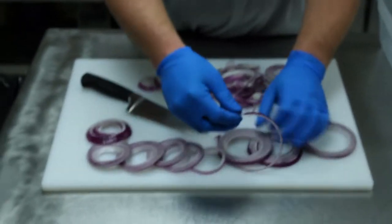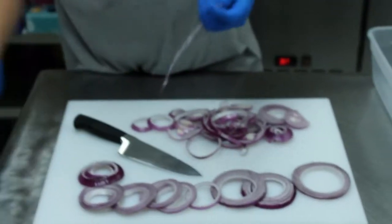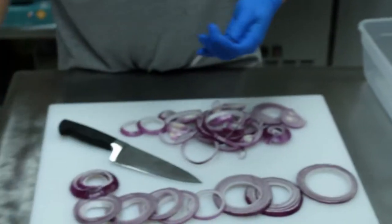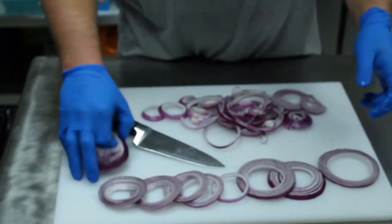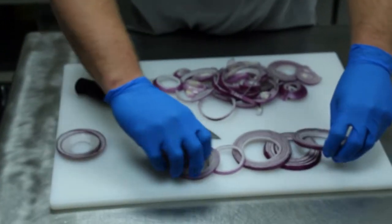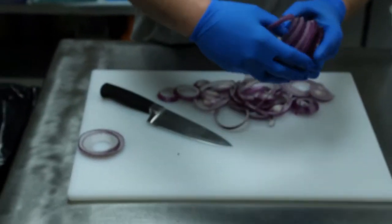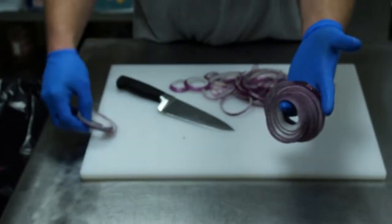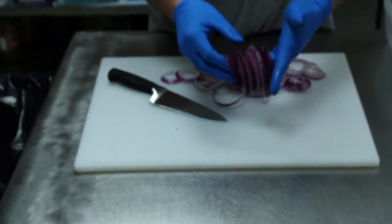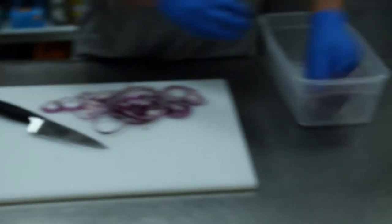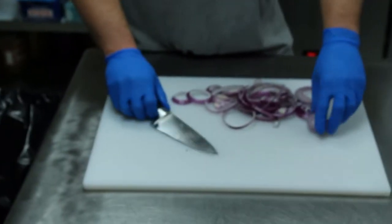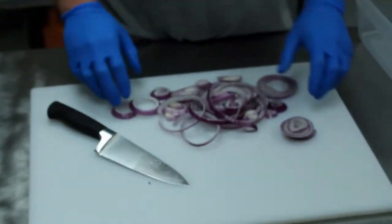Alright. So, these pieces here, these are all the pieces that we'll use on sandwiches. So, out of one onion, that's about what you should have out of every onion for going on the hoagies. Put that back in there. Save it for later. And, we're going to move on to dicing.